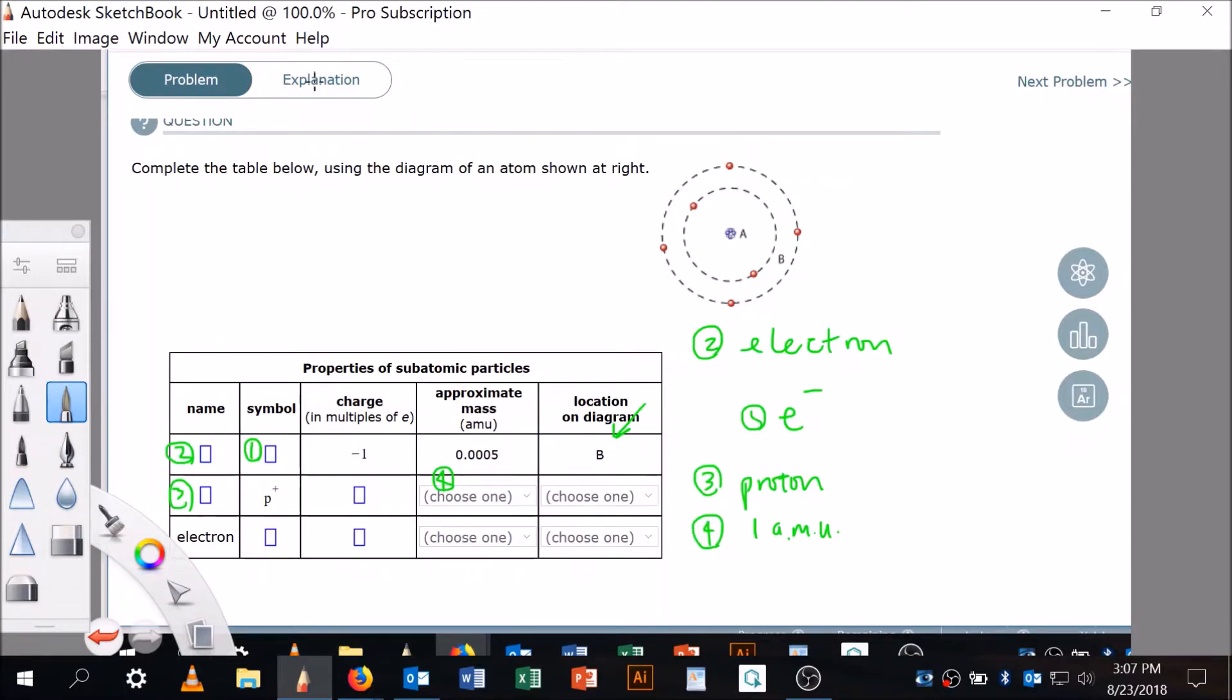So if that doesn't make sense, go up and click this explanation here, and you'll see that the mass, the approximate mass in amu of a proton is about one, okay? And then the location of the diagram, where's it going to be? The proton, again, click on the explanation if you haven't read that, and the proton is in the nucleus, so it's going to be in A. So let's say answer five, it's going to be A, all right? So you've got a drop down menu there, and you got to put A, okay?